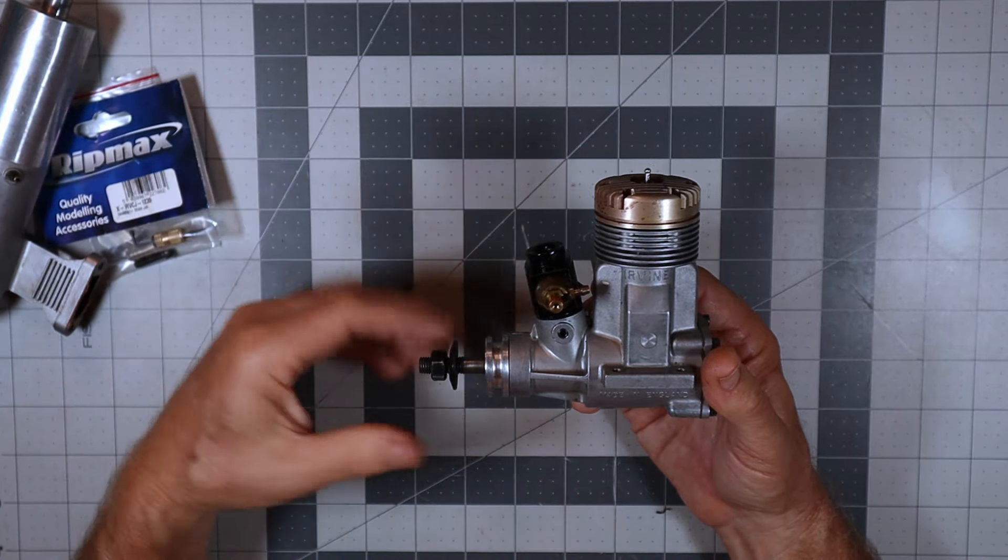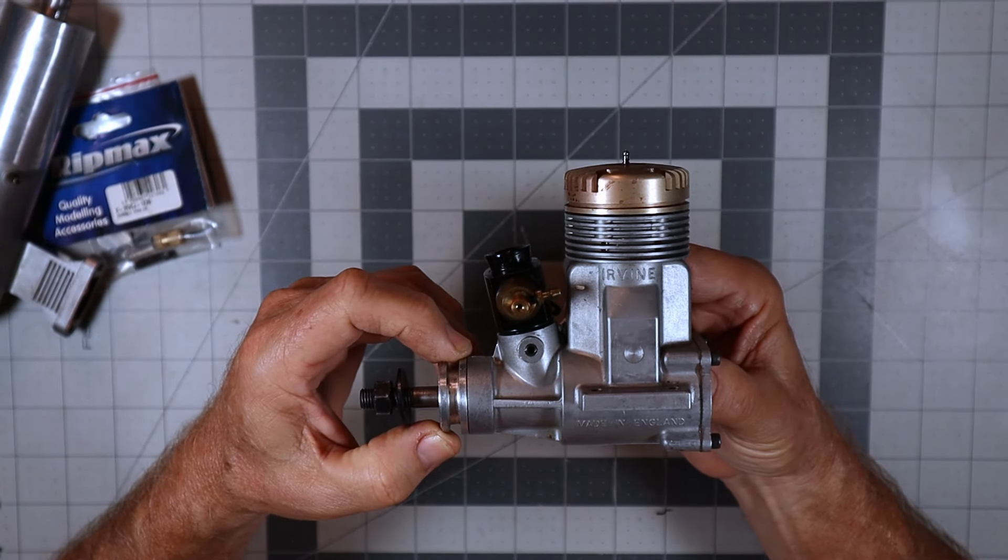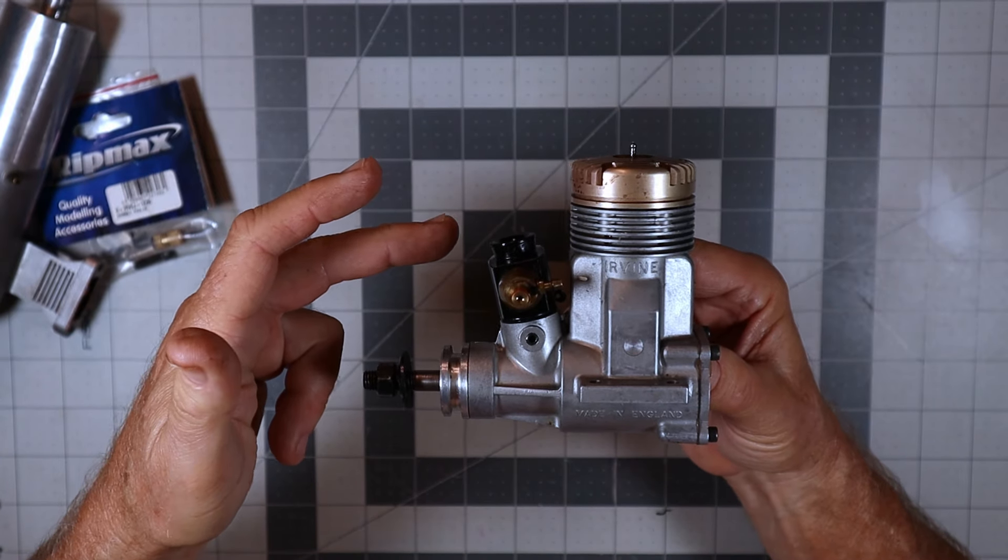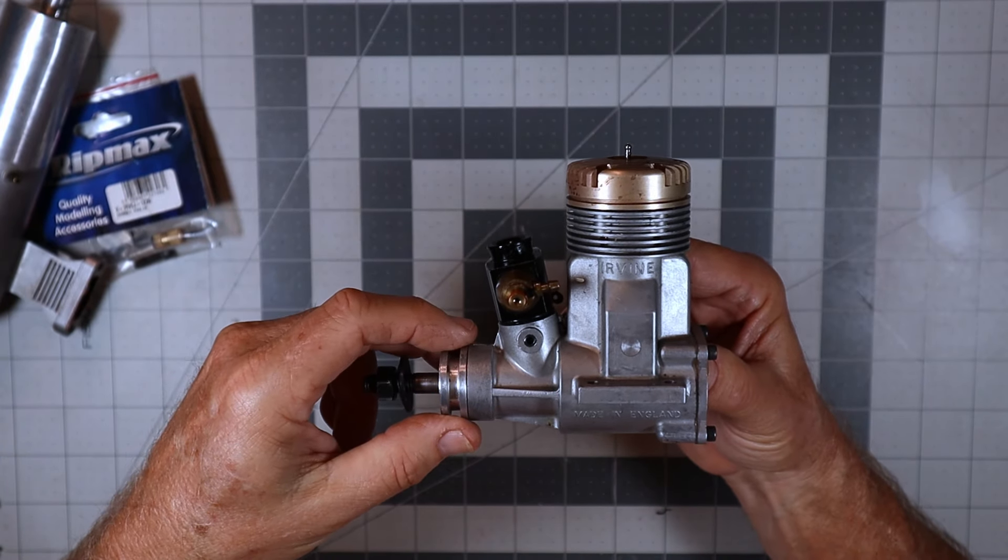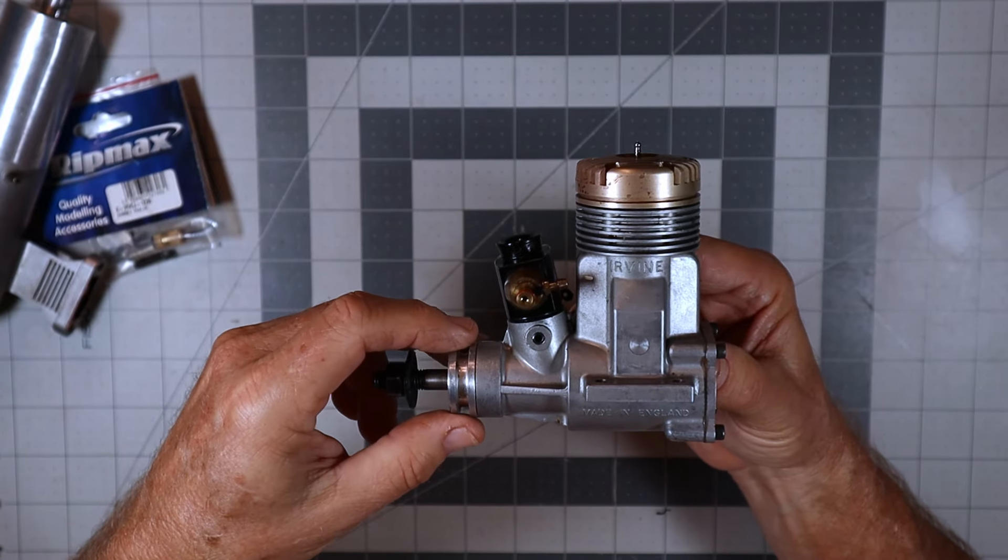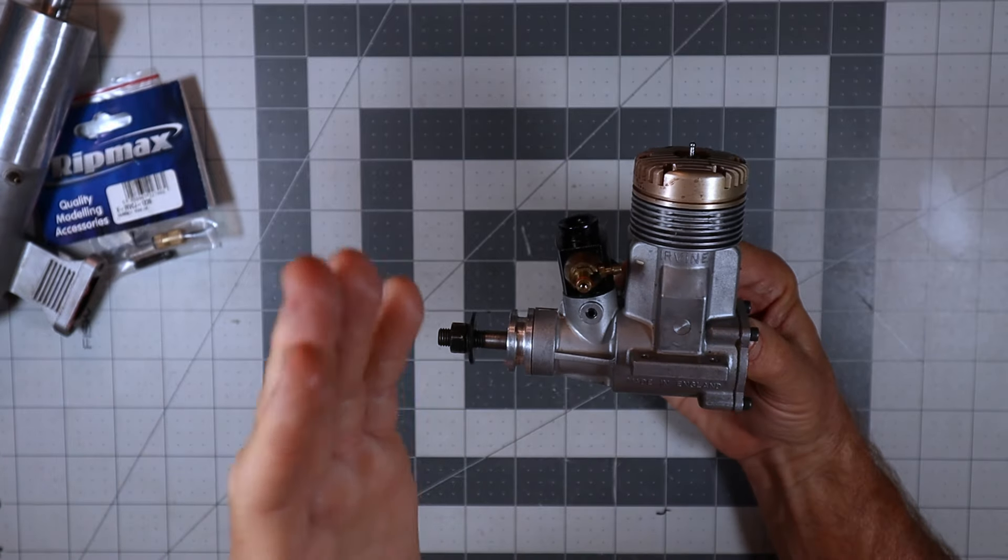Now the unfortunate thing I just discovered is that the only 13 inch props I really have, I found three and that's it. Two of them are old black composite master air screws and they're 13.6's, and then I've got a newer APC 13.7.